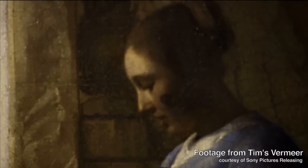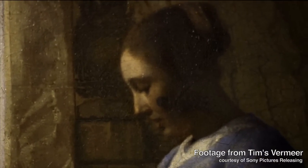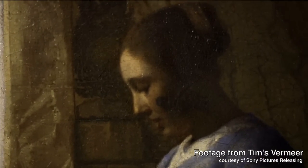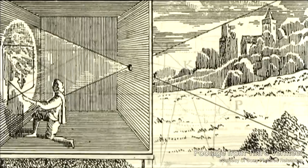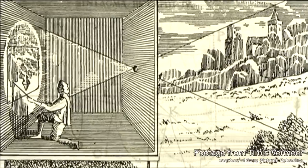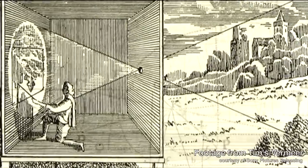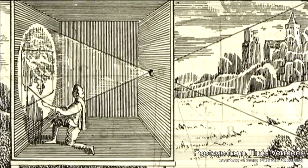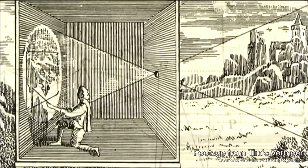I wrote a book and published it in 2001 called Vermeer's Camera. The book was about the idea that the great Dutch painter used the camera obscura, which is a predecessor of the photographic camera — it's just a lens and you project an image. It was quite an old idea; lots of people have suggested it, but I had some new arguments.